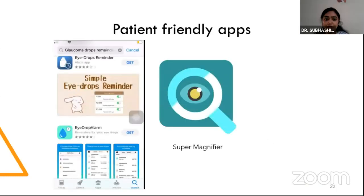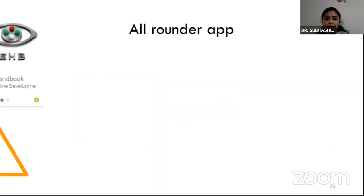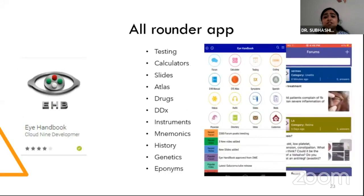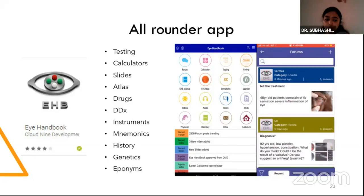Some patient-friendly apps worth mentioning: a simple eye reminder app for glaucoma patients, a super magnifier app for low-vision patients, and Dignify — an audio app that reads out material you have photographed. One all-rounder app for numerous options including testing, calculators, atlas, differential diagnosis, and clinical cases is the iHandbook app, available free on both Apple and Android.